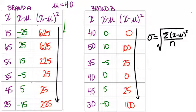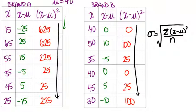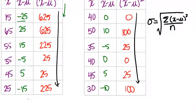The next thing we should do is find the sum for each of these last columns, then divide that by 6 and take the square root. The sum for all the x minus mu squared values for Brand A, if you add up 625, 625, 225, 25, 25, 225, you get 1750. And the sum for Brand B is 250.